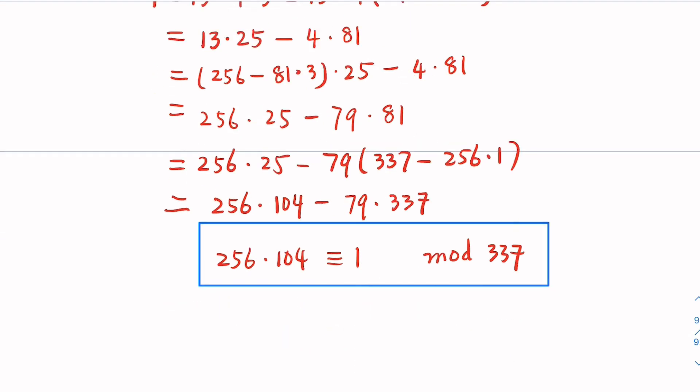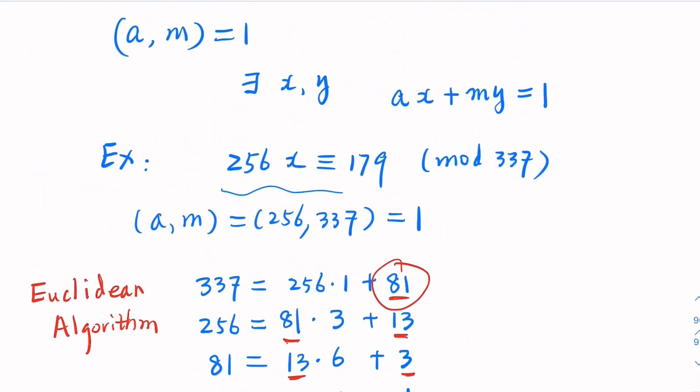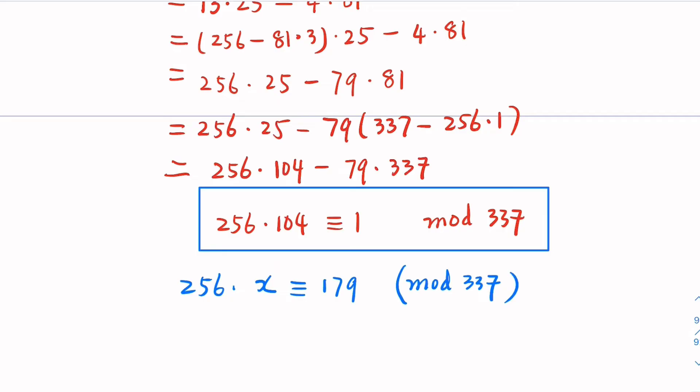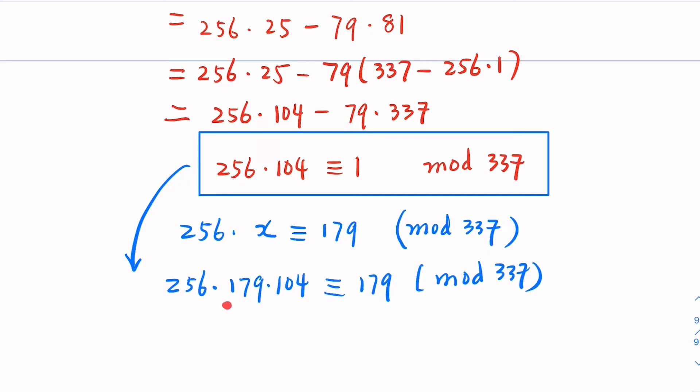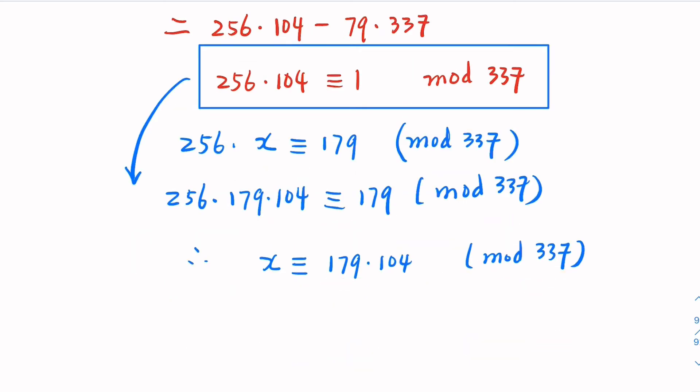Which means 256 times 104 is congruent to 1 mod 337. So that's the meaning of this equation here. The original equation we try to solve is here. We try to solve this equation here. Now, in order to find x, you need to multiply 179 on both sides of this equation. So what you get is 256 times 179 times 104 would be congruent to 179 mod 337. That's directly from the earlier results of Euclidean algorithm, which means our x is going to be this part.